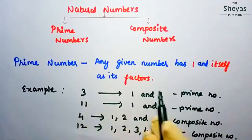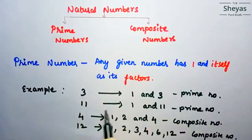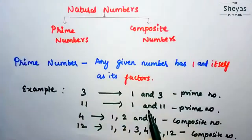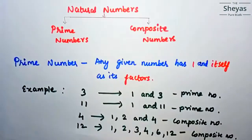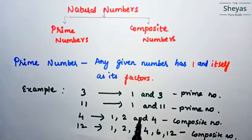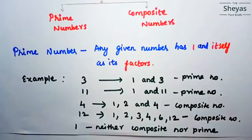So just keep in mind: the number which has 1 and itself as its only factors is said to be a prime number. Also keep in mind: the number 1 is neither composite nor prime.